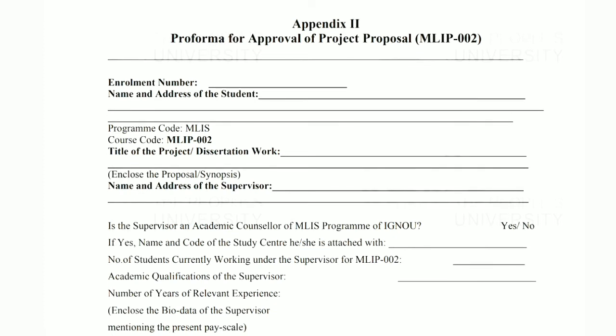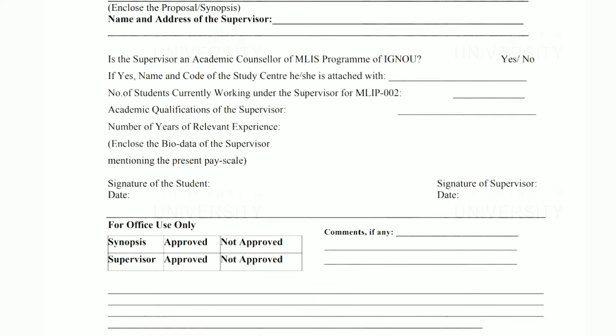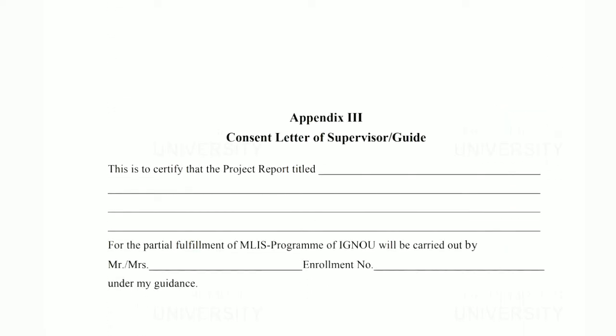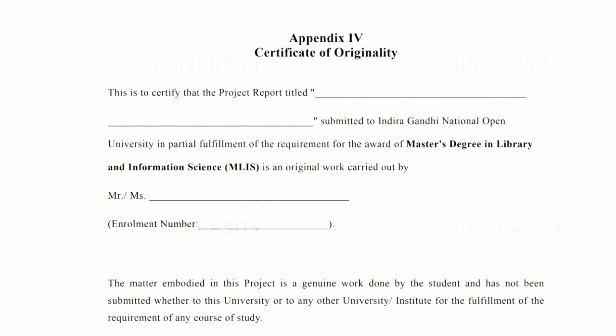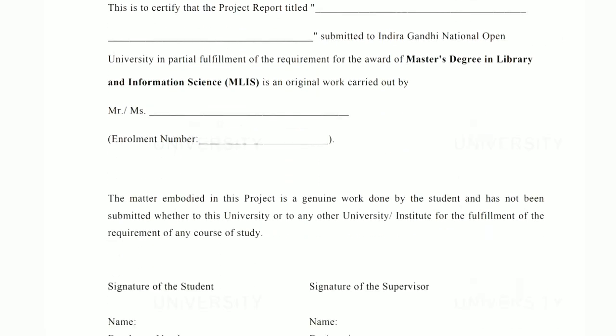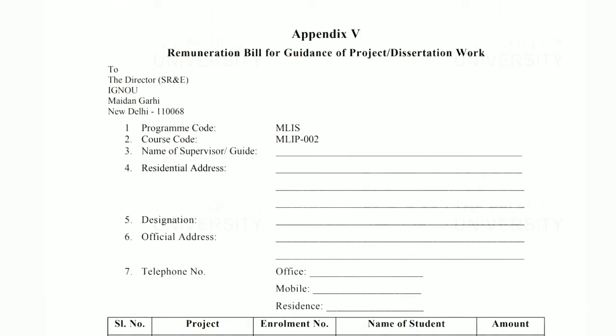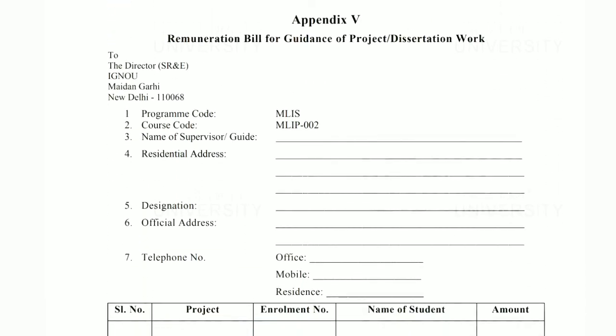Appendix 2 is the performa for approval of the project proposal, which you fill in original and send with your project submission. Appendix 3 is the consent letter of the supervisor or guide, which you also need to send. Appendix 4 is the certificate of originality, which must be included. These are all the required items you need to cover as per the renovation bill guidelines for project and dissertation work.